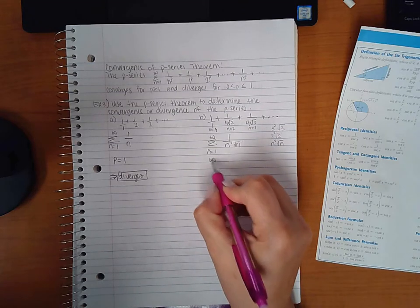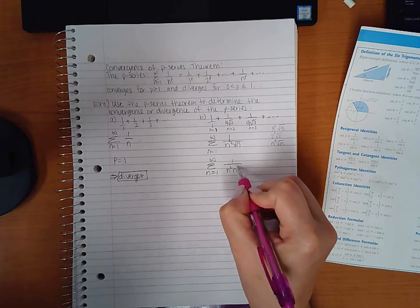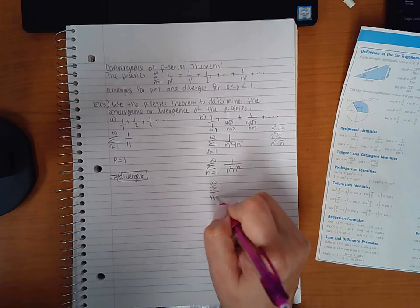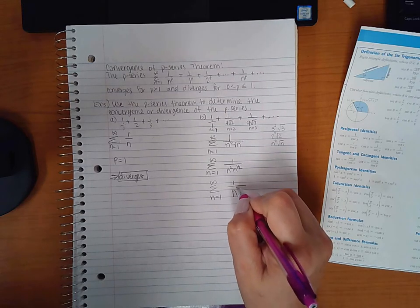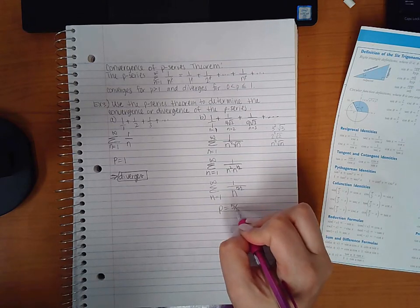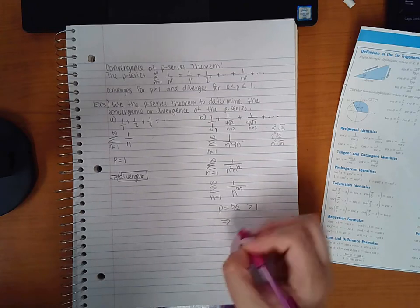And then if I use my multiplication rule, I will add those exponents together, giving me n to the five-halves. Now I can identify that p is five-halves, and that is greater than one, which means that the series converges.